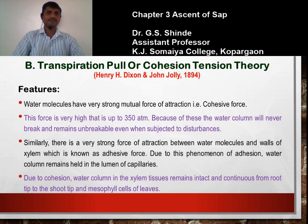This is the only theory of ascent of sap which is widely accepted and fully supported by experimental evidences. It has a sound basis and faced no objections at all. Many scientists have strongly supported and confirmed that ascent of sap in plants occurs through the mechanism of transpiration pull.